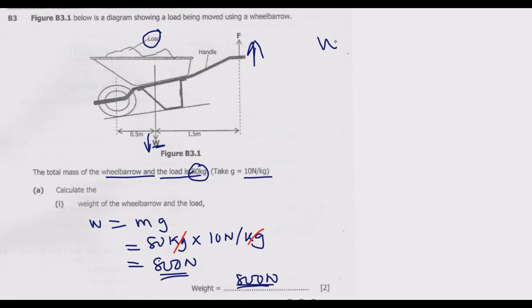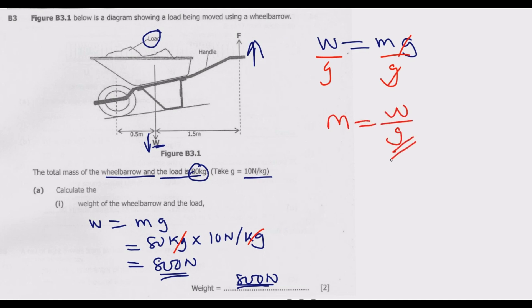Note that you might be given weight and asked to find the mass. To do that, simply make mass the subject of the formula: divide both sides by g, so mass equals weight over gravity. When you think about questions using these same principles, this paper becomes the easiest paper you'll ever come across.